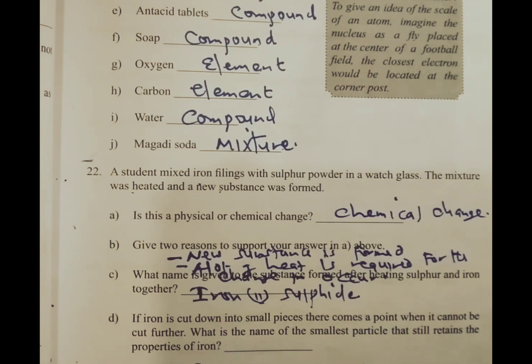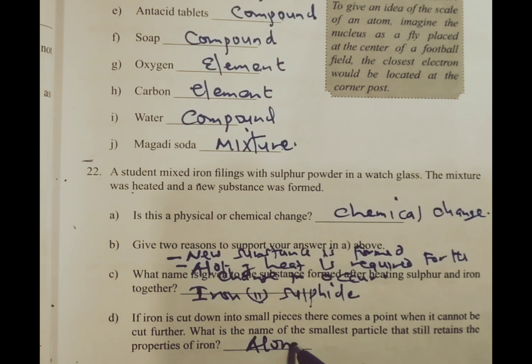We go to part D. If iron is cut down into small pieces, there comes a point when it cannot be cut further. What is the name of the smallest particle that still retains the properties of iron? This is an atom.